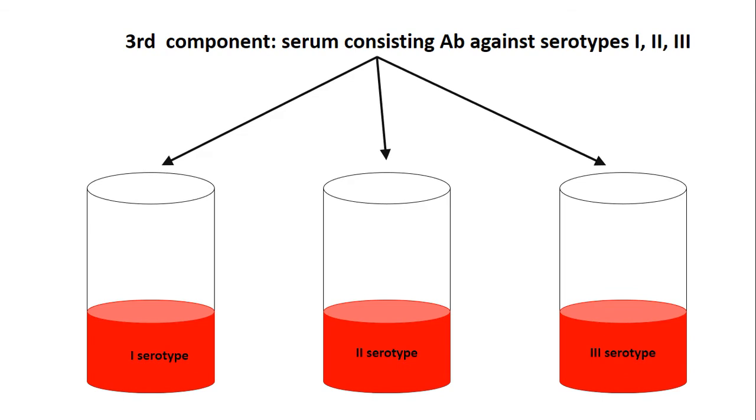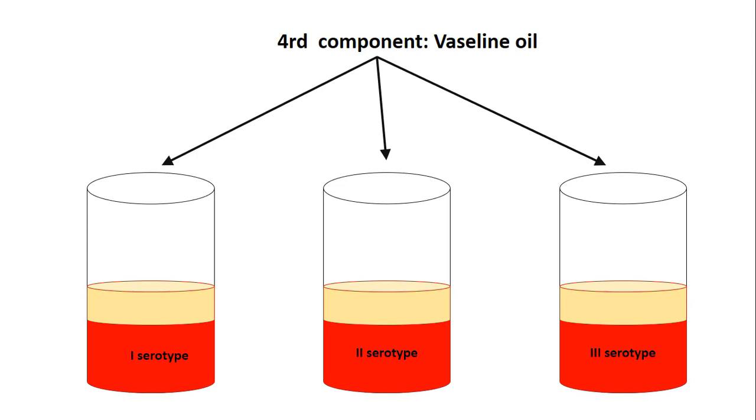In the third step, we use serum containing antibodies against serotype 1 in the first tube, serum containing antibodies against serotype 2 in the second tube, and serum containing antibodies against serotype 3 in the third tube.